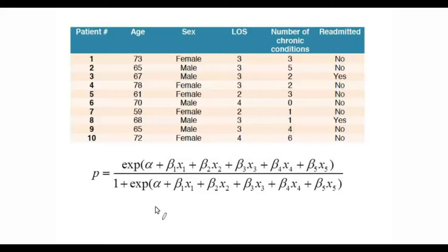And the predictors for these 10 patients are age, sex, length of stay, and number of chronic conditions. And of course, the fifth predictor in the model is age squared. We can get that just from the age column and square it. And then the last column of readmitted is the actual observed results of these patients.